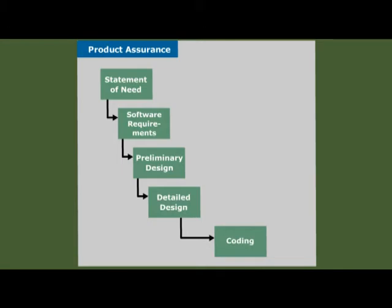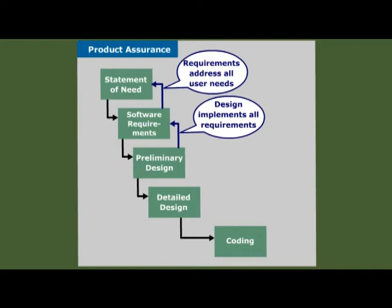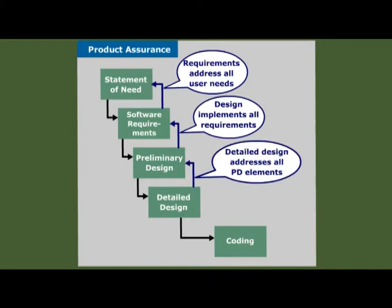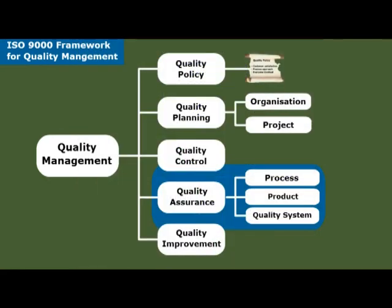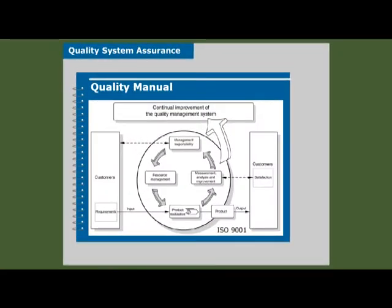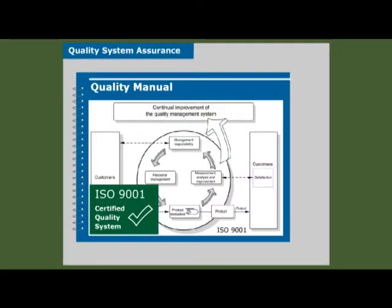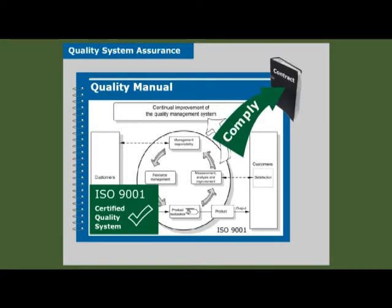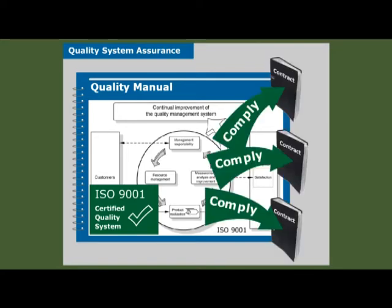For example, in the case of software, we confirm that the software requirements address all user needs, the preliminary design implements all the requirements, the detail design fleshes out all elements of the preliminary design, and the code implements all components of the detail design. Assuring the quality system means demonstrating that it complies with established best practice as per ISO 9001 and any other standards required by a contract.